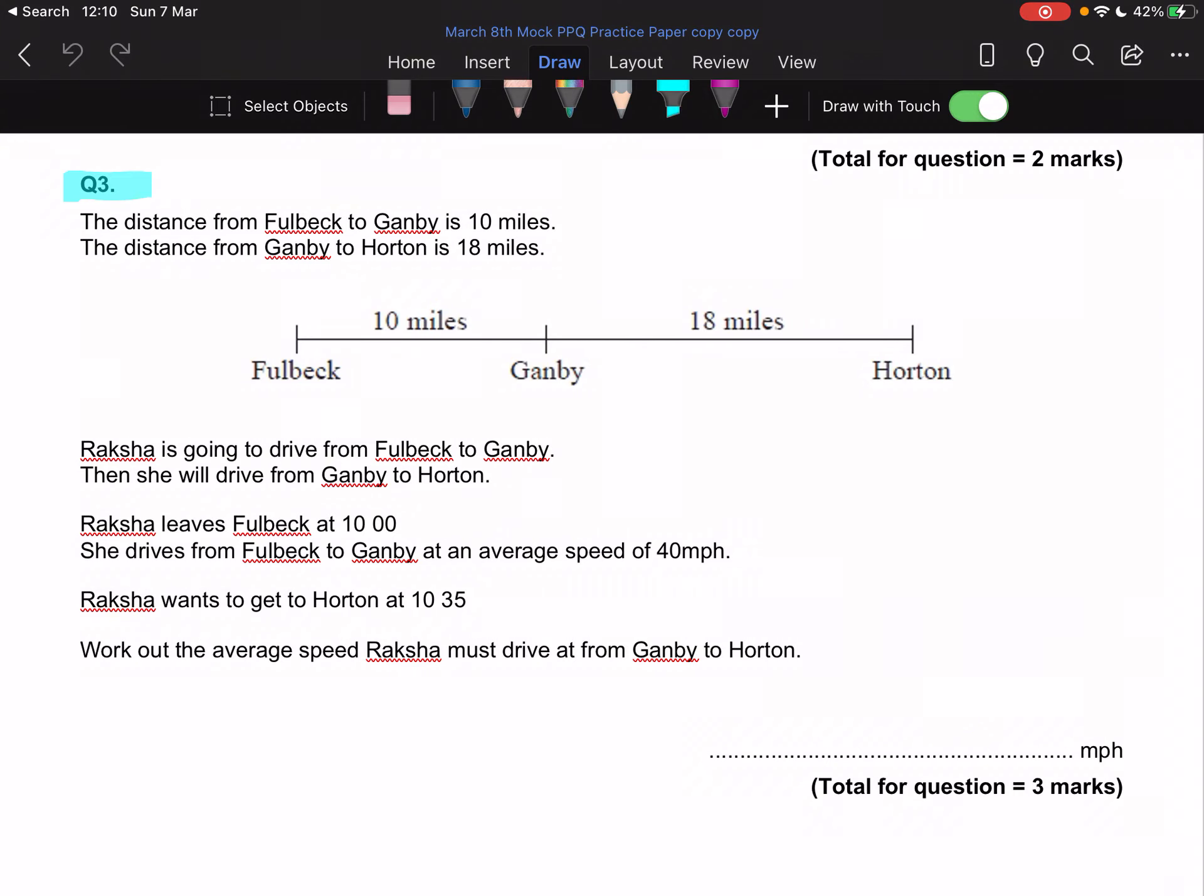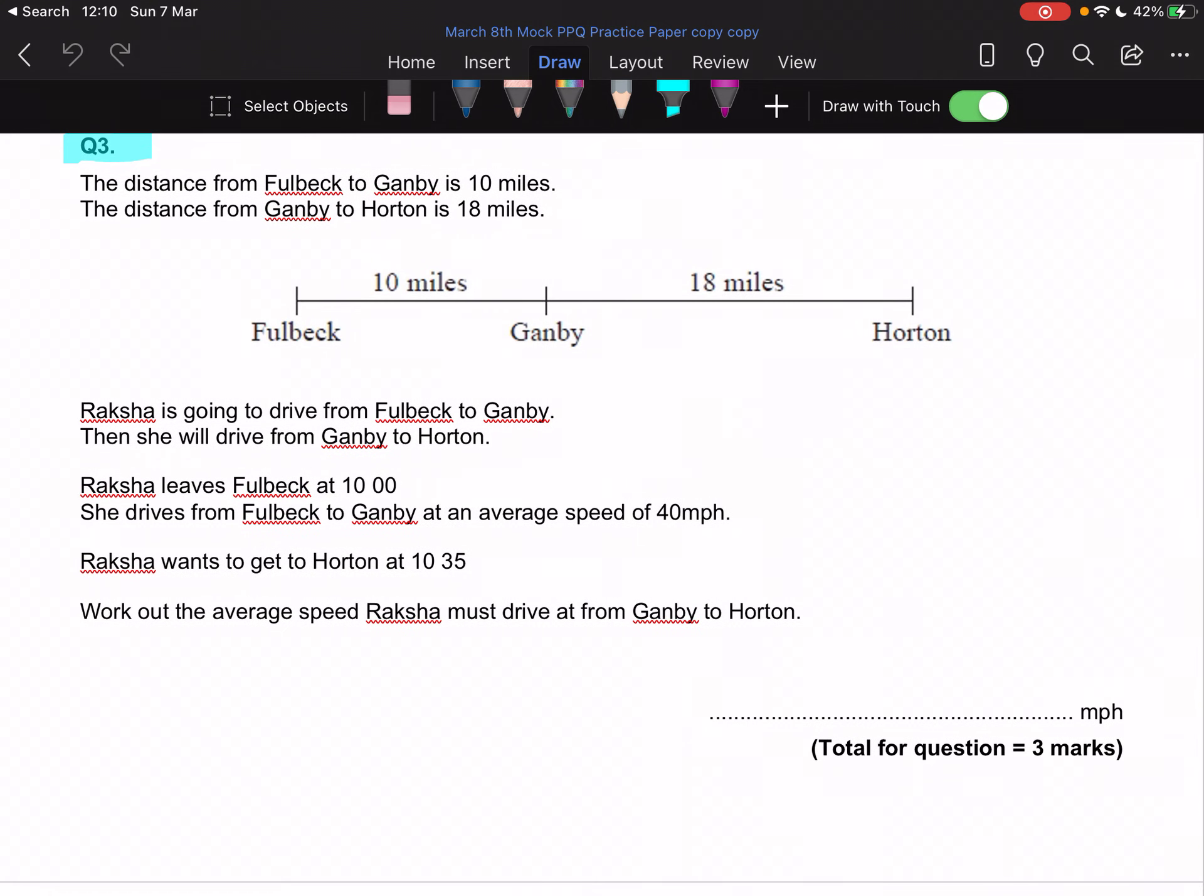Hello chicas, let's look at question number three. It's a speed, distance, time question. The distance from Fulbeck to Gamby is 10 miles, already annotated. The distance from Gamby to Horton is 18 miles.